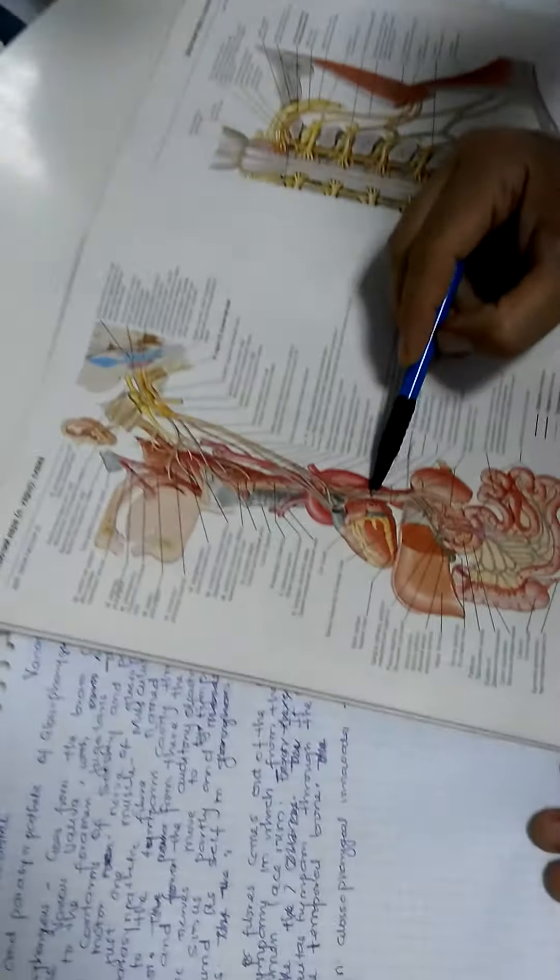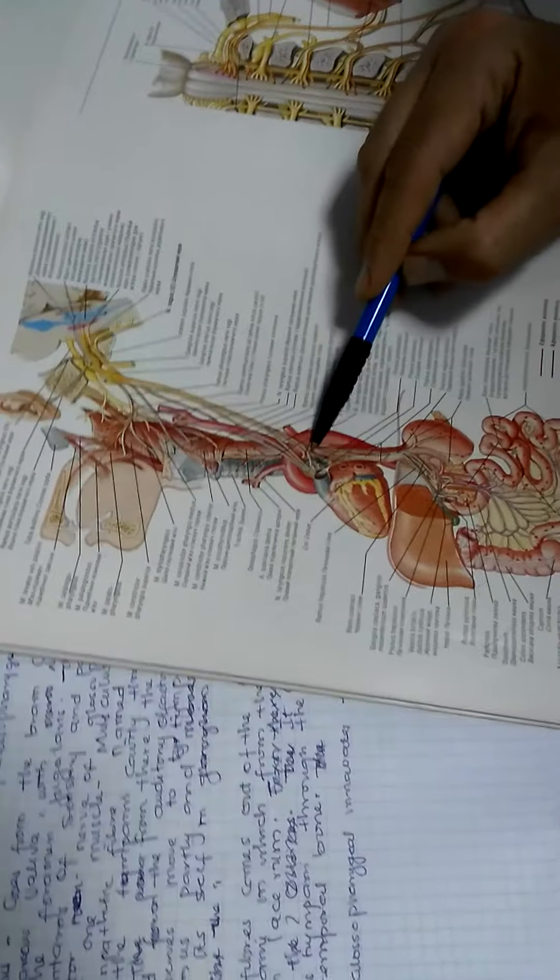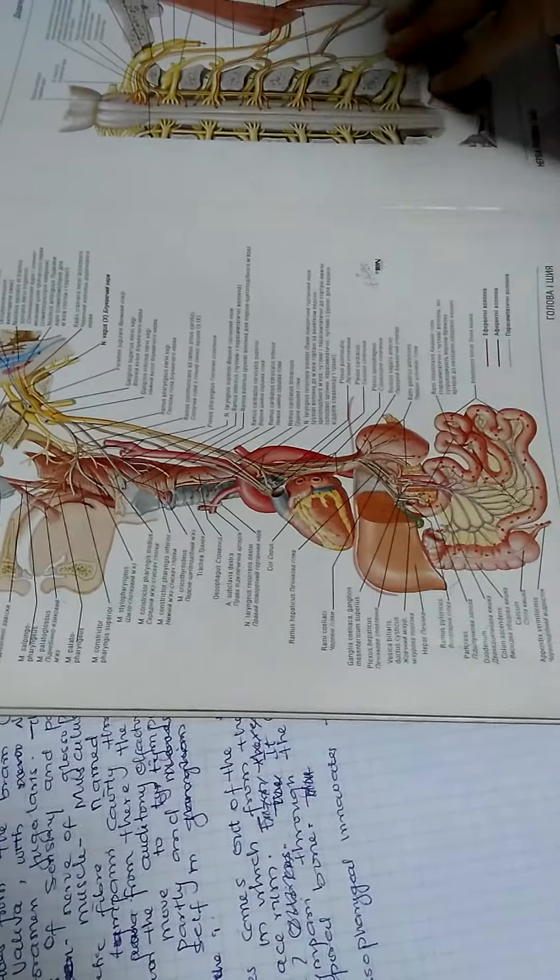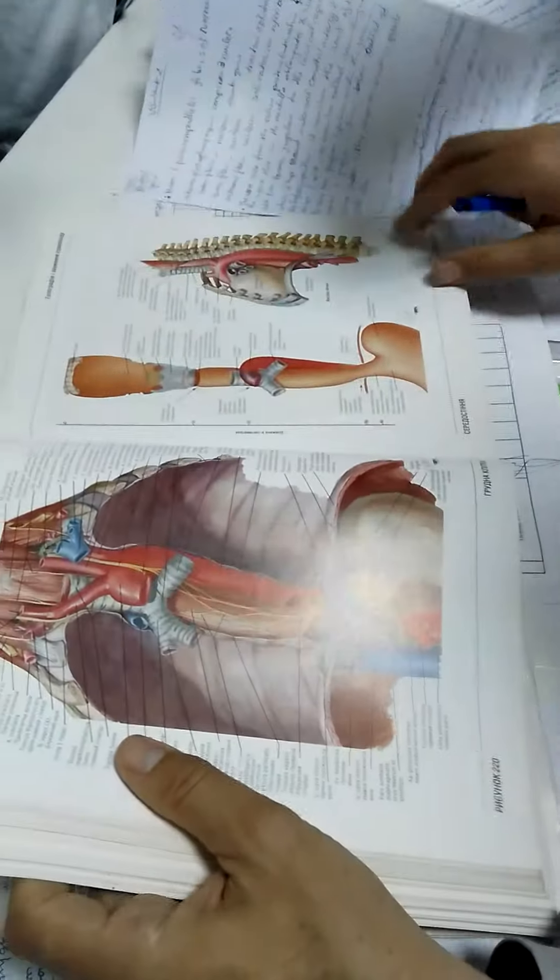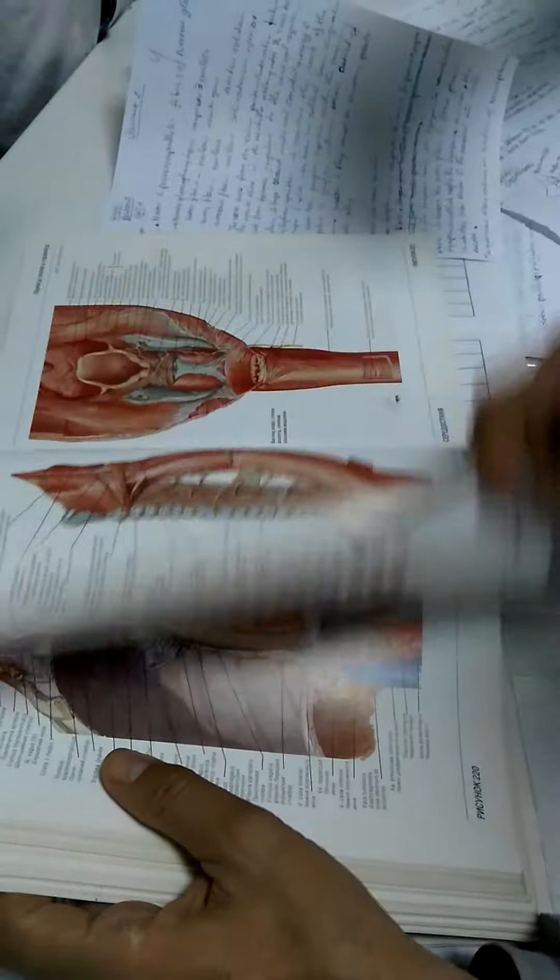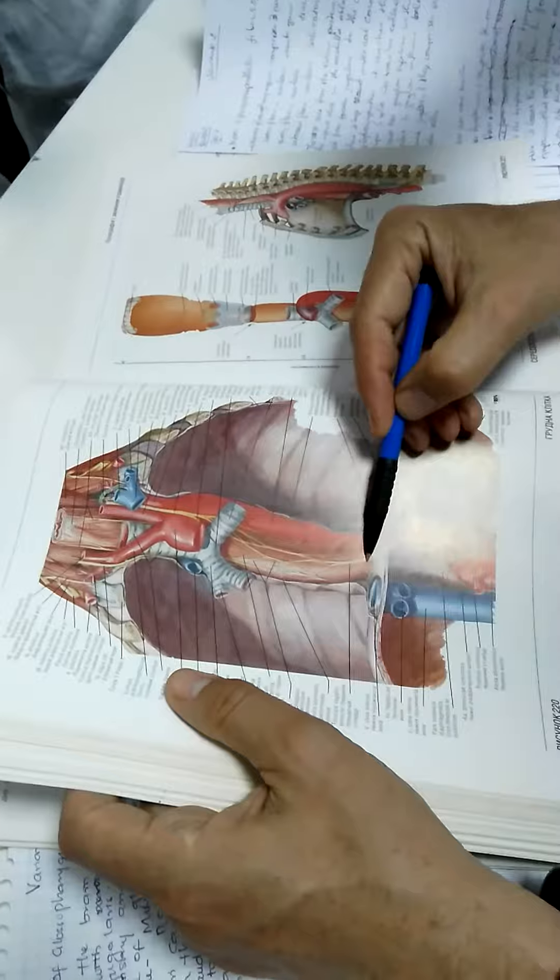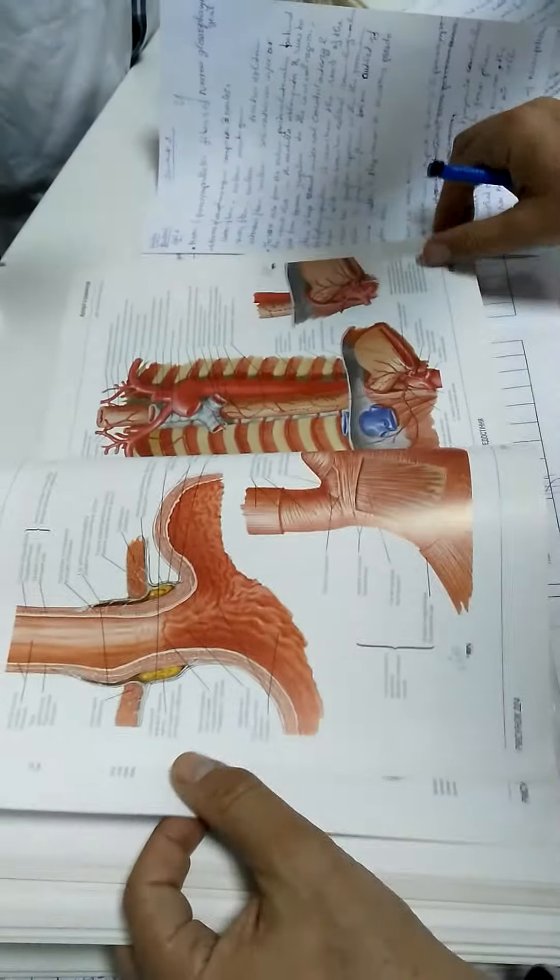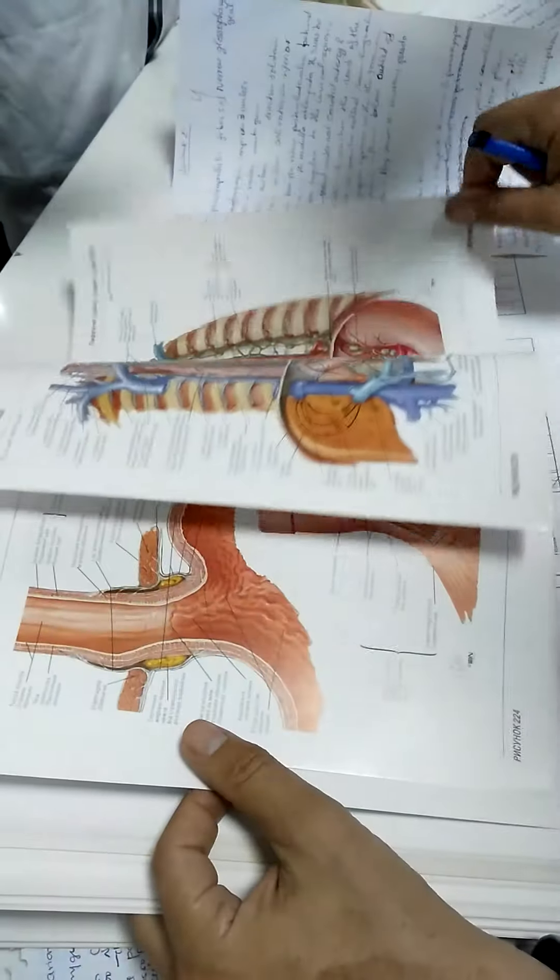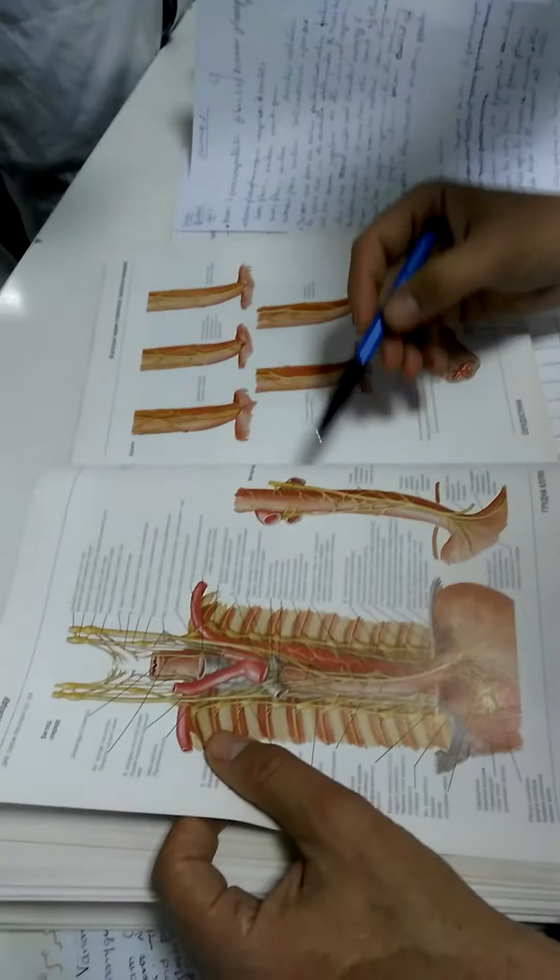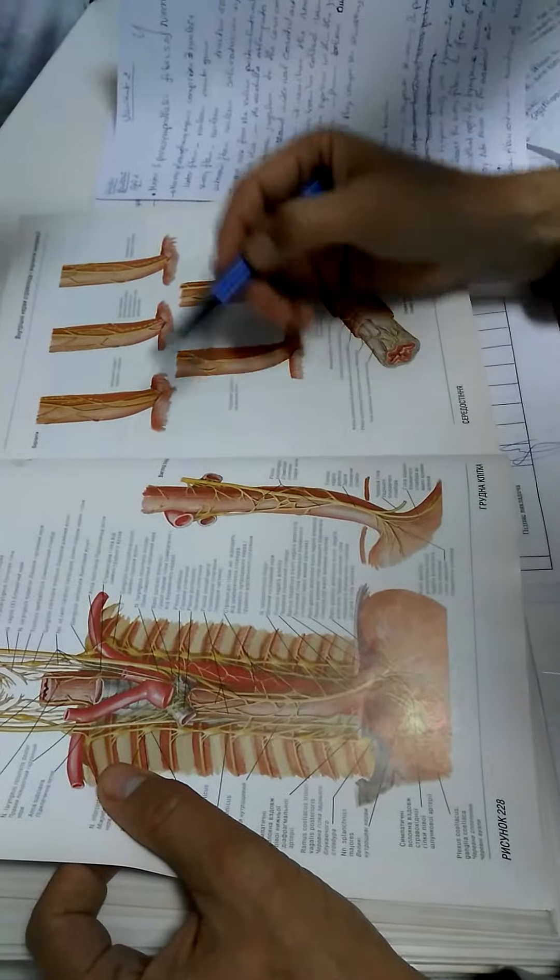So next, thoracic part. In thoracic part nervus vagus goes by different ways at the right and left side. The left nervus vagus goes in front of the esophagus. The right one goes in the back of the esophagus. And both together form plexus esophageus. You see, the left one in front, the right one in back.